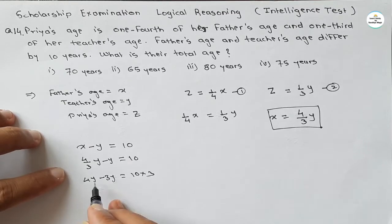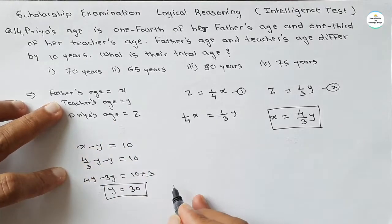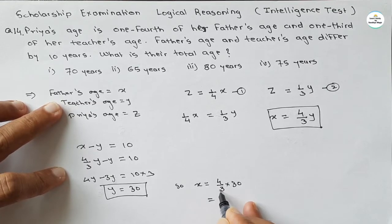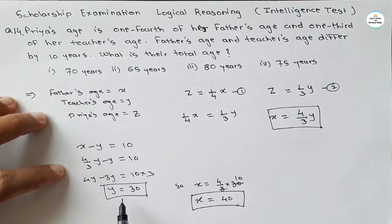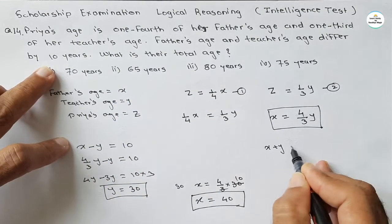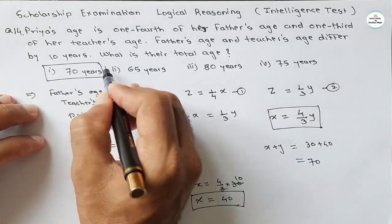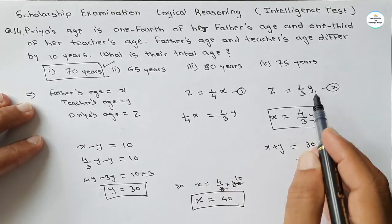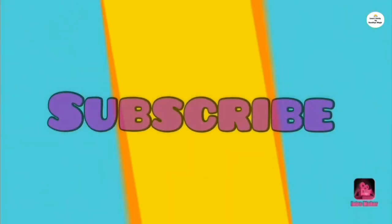Solving: 4y − 3y = 30, so y = 30 — the teacher's age is 30. Then x = (4/3) × 30 = 40, so the father's age is 40. Their total age is x plus y = 30 plus 40 = 70. So 70 is the answer — the first option is correct. Just deriving the equations from the data is the important step; solving is simple. This is all for this video — do learn, do enjoy, thank you.